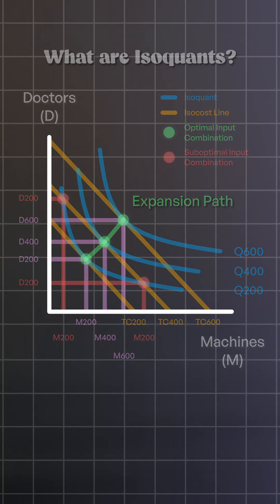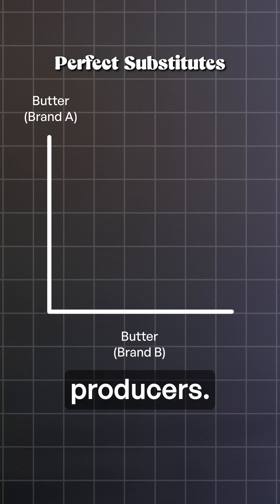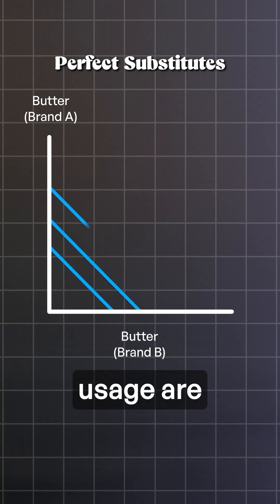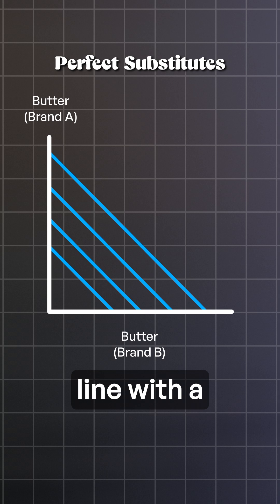Isoquants can take many shapes, but let's take two special cases. First, perfect substitutes. Think about buying goods like butter or electricity from two different producers. Their purpose and usage are the same, and one can fully replace the other. Their isoquant is a straight line with a constant slope.